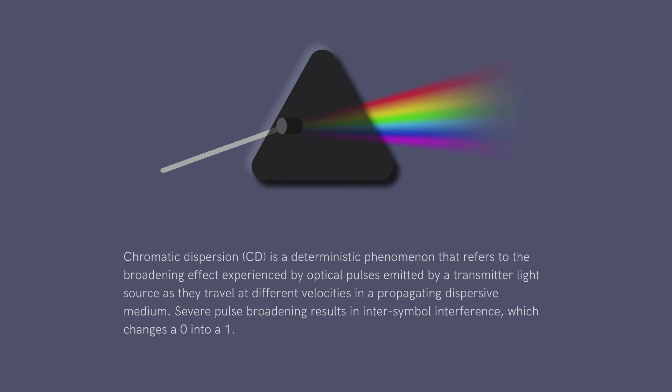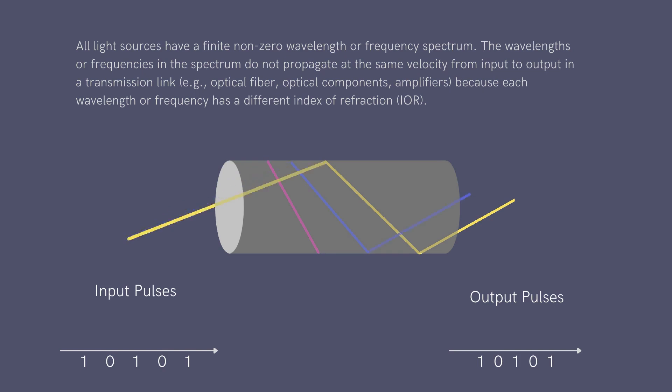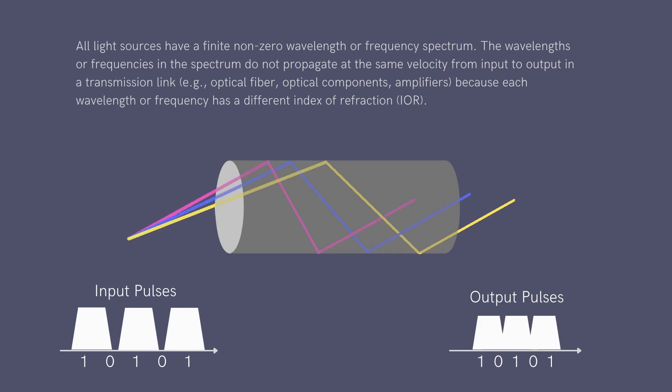The phenomenon that white light can be separated into different colors is named dispersion. Dispersion causes pulses to spread in optical fibers, degrading signals over long distances, and ultimately resulting in bit errors.